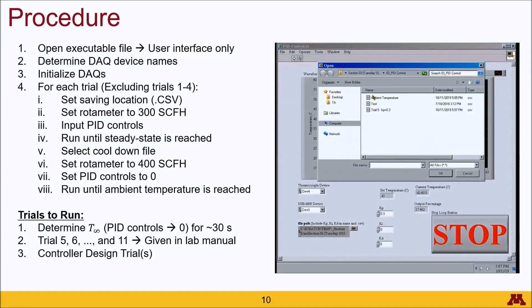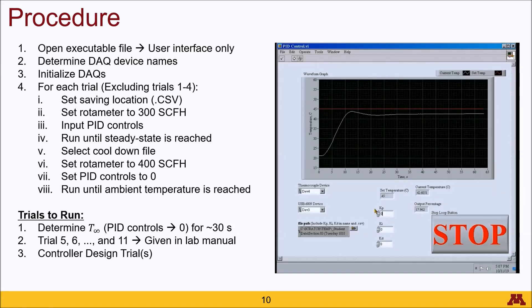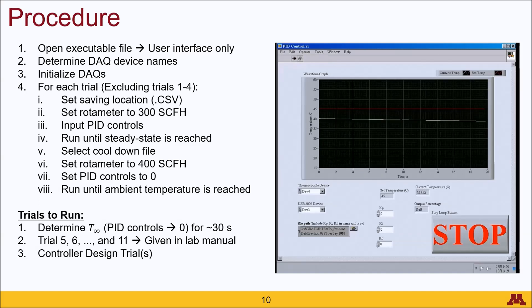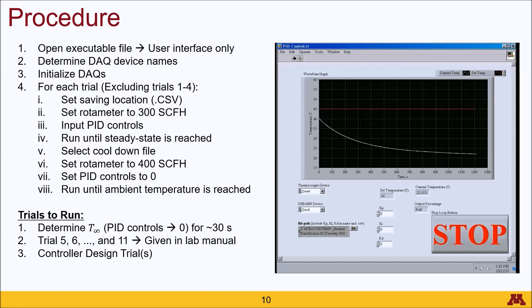Once you've ensured steady state, press stop and run a cooldown file. When you run this cooldown, change the rotometer from 300 standard cubic feet per hour to 400 SCFH, because this will allow you to cool down your system faster. The cooldown information is not important for your data analysis — it is merely used to monitor the temperature as it drops down to ambient. This takes a long time, but it can be very valuable time used for analyzing your data. If you do this properly, you should have a large portion of your analysis done before you leave the lab. Once you've reached ambient temperature, select the next trial and repeat the same procedure.